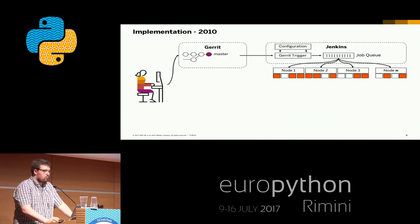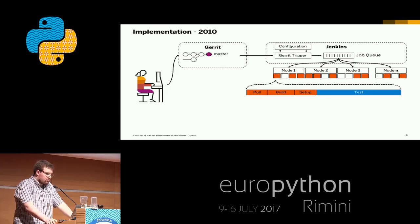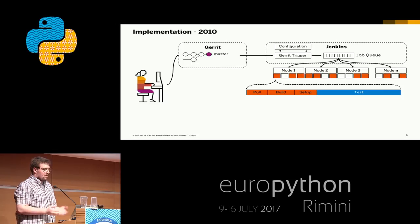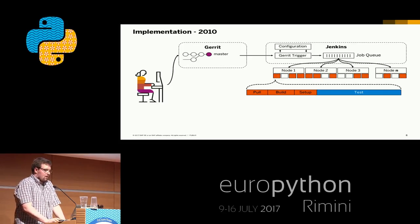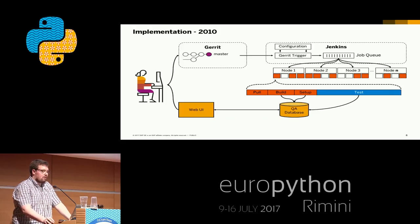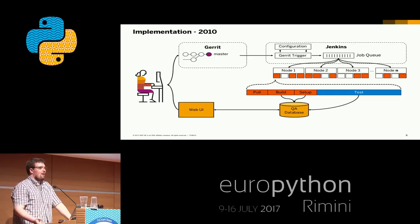Let's take a deeper look at what such a job looks like. A job is basically divided into four parts: check out the latest source code, build the database from source, set up a complete database, and then run the tests. One special thing already included in the 2010 version: we have a central database where we store all our test results. The developer can then review this data via a web UI, and we can still access old data — I can still review test results from 2010.